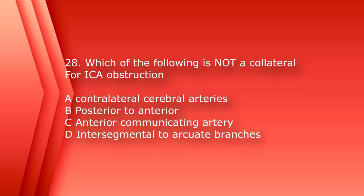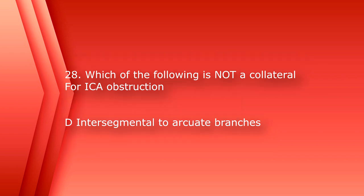Number 28: which of the following is not a collateral for ICA occlusion? A. Contralateral Cerebral Arteries, B. Posterior to Anterior, C. Anterior Communicating Artery, or D. Intersegmental to Arcuate Branches. The answer is D, Intersegmental to Arcuate Branches — those are in the kidney.